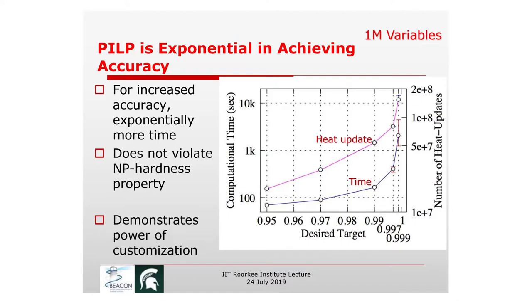The problem is still hard: if you want to get closer and closer to the true optimum, you need super-exponential time. But if you're willing to stop at a practical threshold — say 99.7% — polynomial time methods are possible.